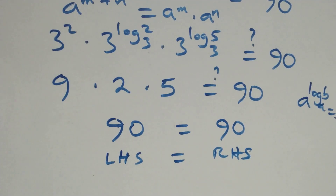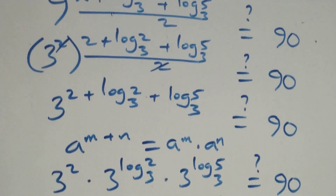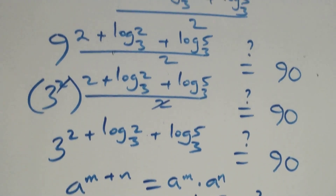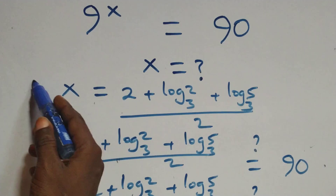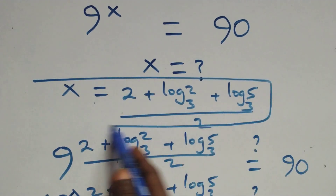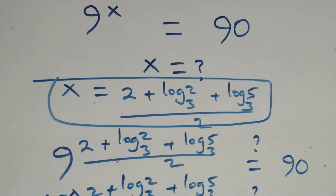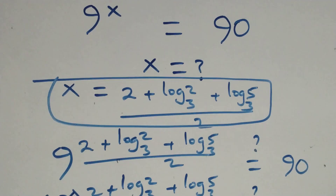Therefore we conclude that x equals 2 plus log 2 base 3 plus log 5 base 3, all over 2, satisfies the given problem. Thank you for watching — don't forget to subscribe for more videos, turn the notification bell on, share this video, give a thumbs up, and leave your comments. See you next time, bye for now.